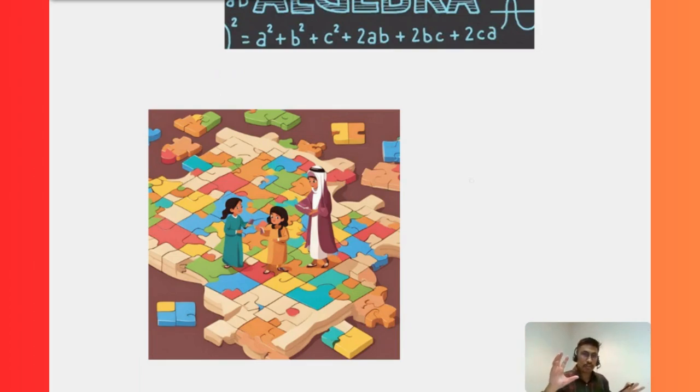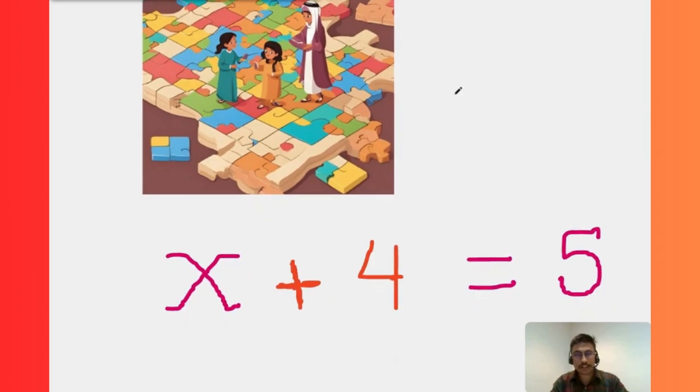Now look at this: x plus 4 equals 5. All right, you might be thinking, where did this alphabet come from here?